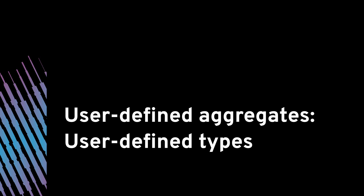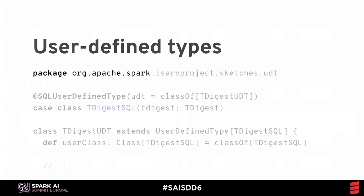User-defined types are companion data structures that tell the data frame how to store your aggregation working data and also how to present the final aggregation results back out to the user. Due to certain Spark types not having external visibility, you need to declare your user-defined types under the org.apache.spark namespace — you can't use your own package namespace here. This is a slight hack, but it's basically harmless.